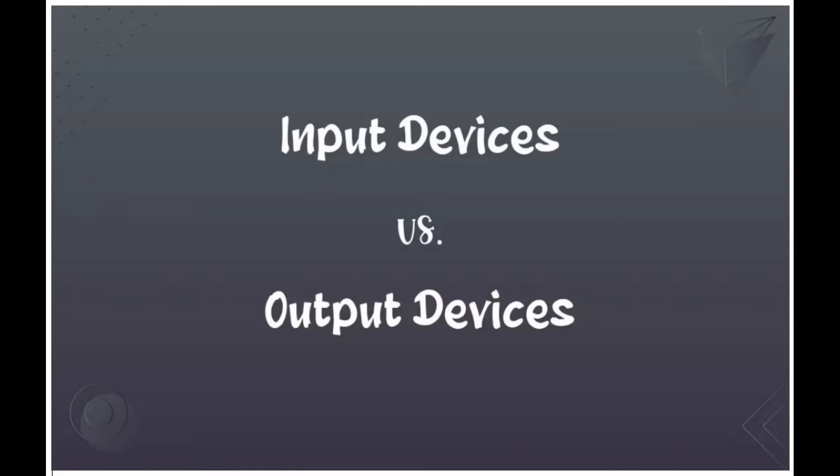Inputs are the signals or data received by the system and outputs are the signals or data sent from it. The term can also be used as part of an action to perform I/O is to perform an input or output operation. I/O devices are the pieces of hardware used by a human, or other system, to communicate with a computer.